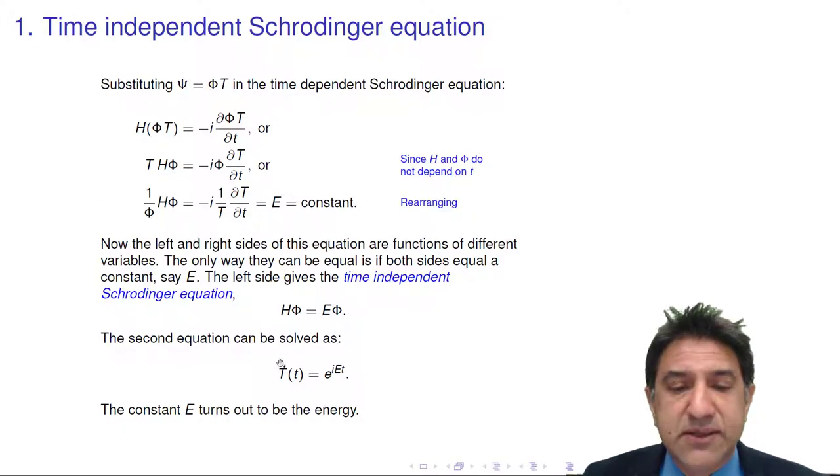The second equation can be solved. That's minus i (1 on T) dT by dt equals E, or dT by dt equals positive i E times the function T. And that is an easy equation to solve. The solution is some constant times e to the iEt. I'm going to assume the constant's one. And we have solved the time-dependent part of the time-dependent Schrodinger equation with this separation.